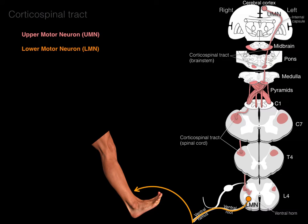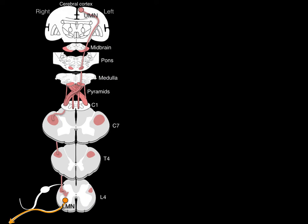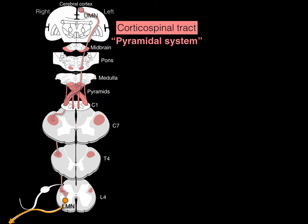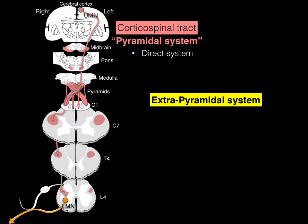The corticospinal tract is also called the pyramidal system because the upper motor neuron cell body is called the pyramid cell (for the big ones), and the axon decussates at the pyramids. The pyramidal system is the direct system. The extrapyramidal system consists of two other systems that indirectly influence the corticospinal tract: the basal ganglia and the cerebellum.